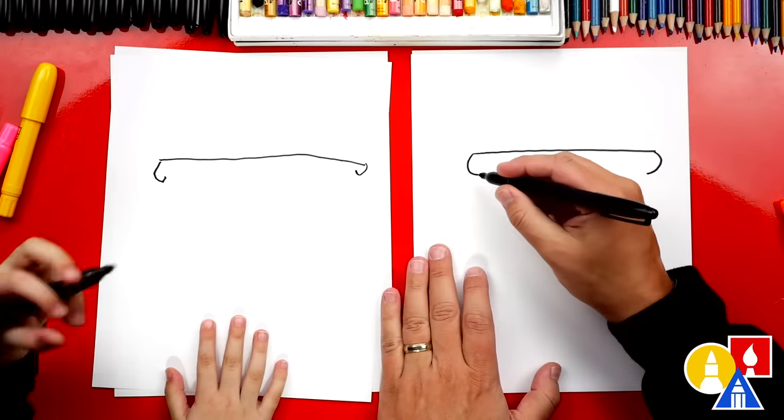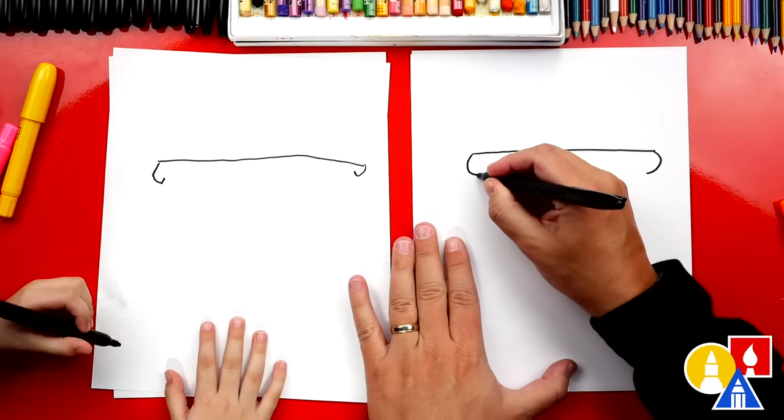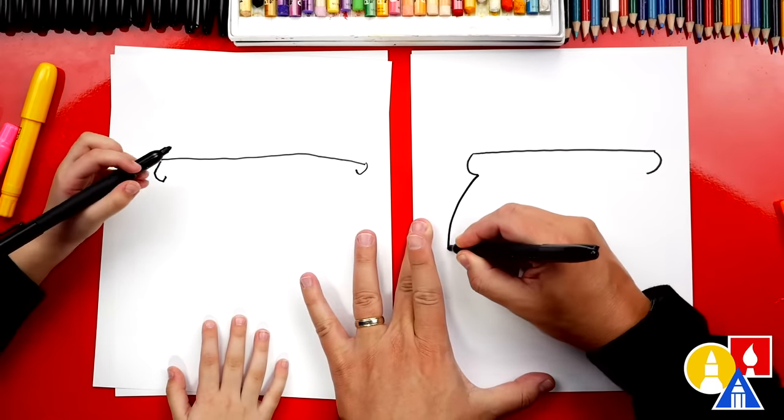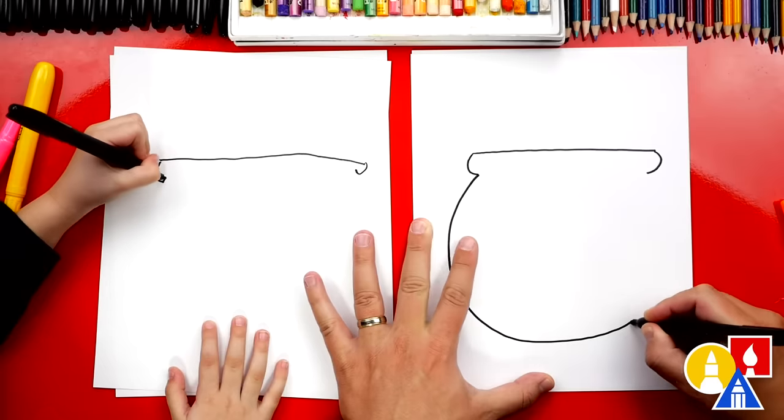Now we're gonna draw the shape of our fish bowl. We're gonna start here on this side and we're gonna draw a big curve. Whoa, look how big.